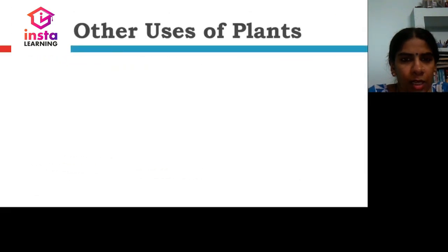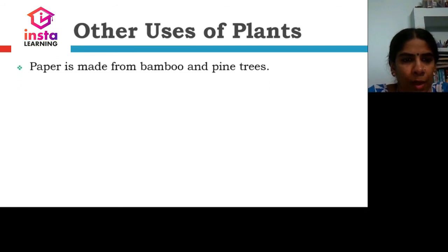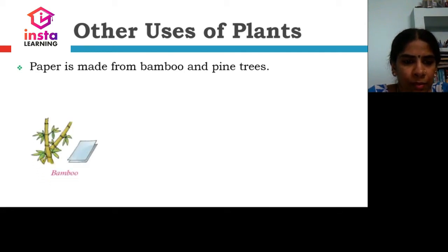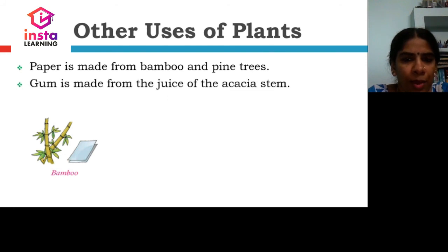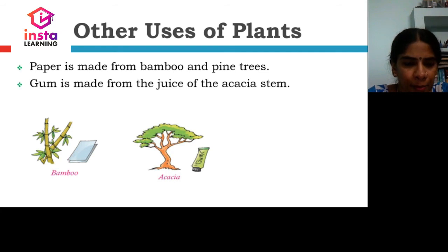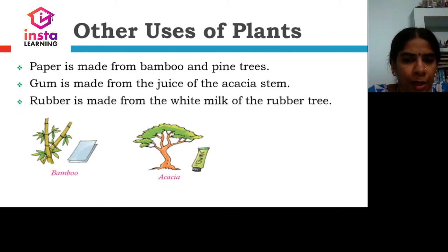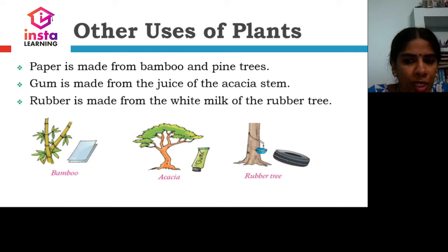Let us see other uses of plants. Gum is made from bamboo and pine trees, and also from the juice of the acacia stem. Rubber is made from the white sap of the rubber tree.